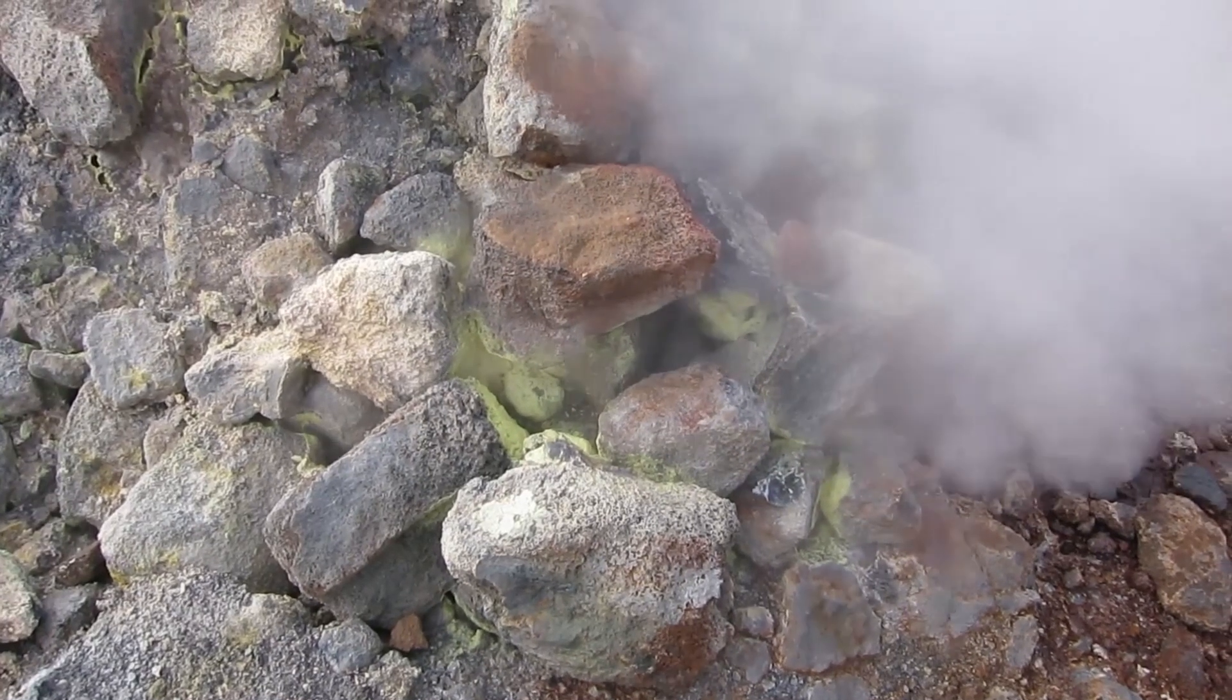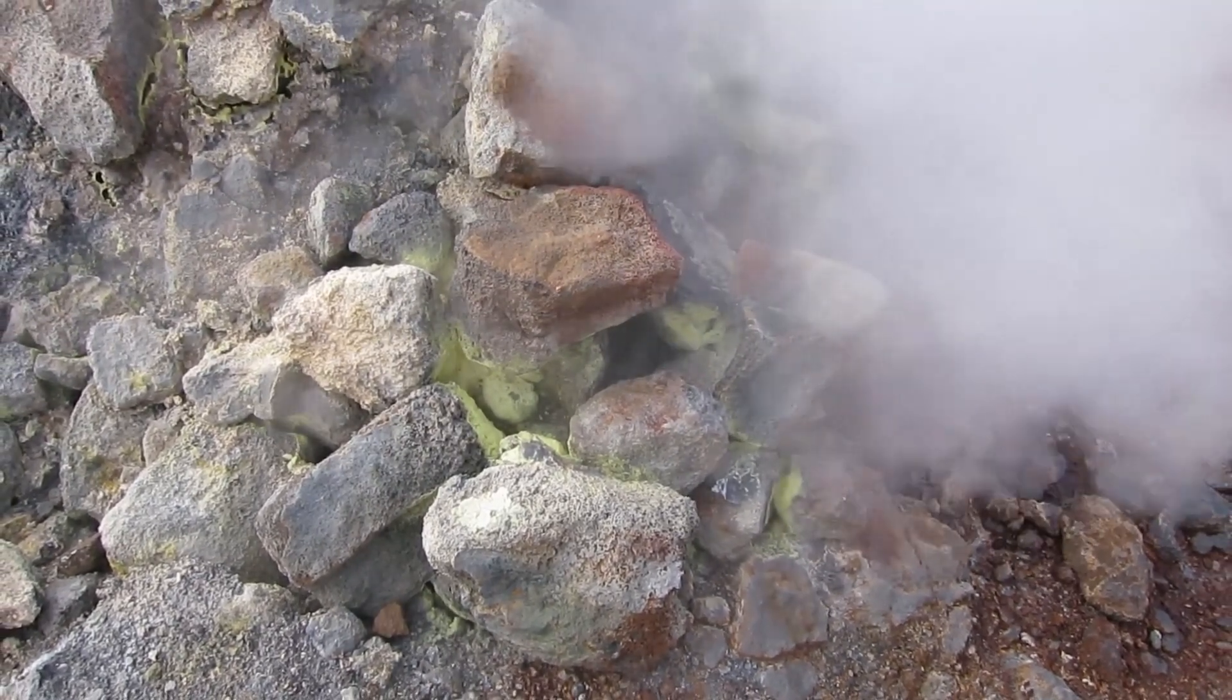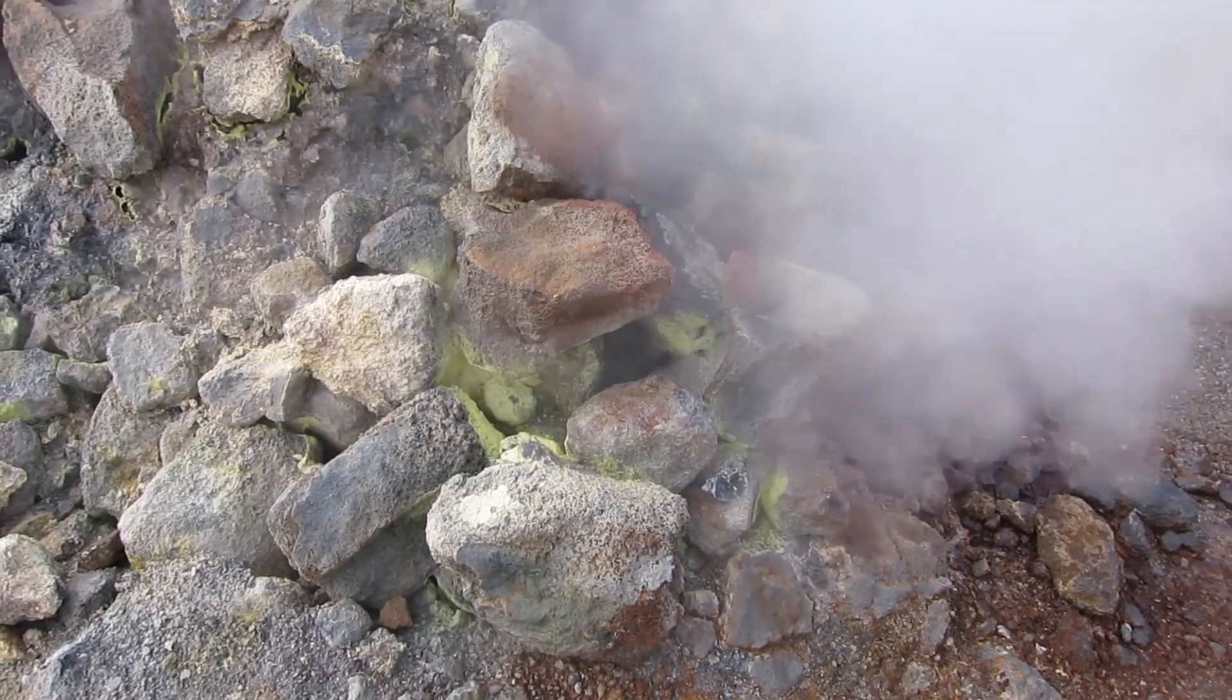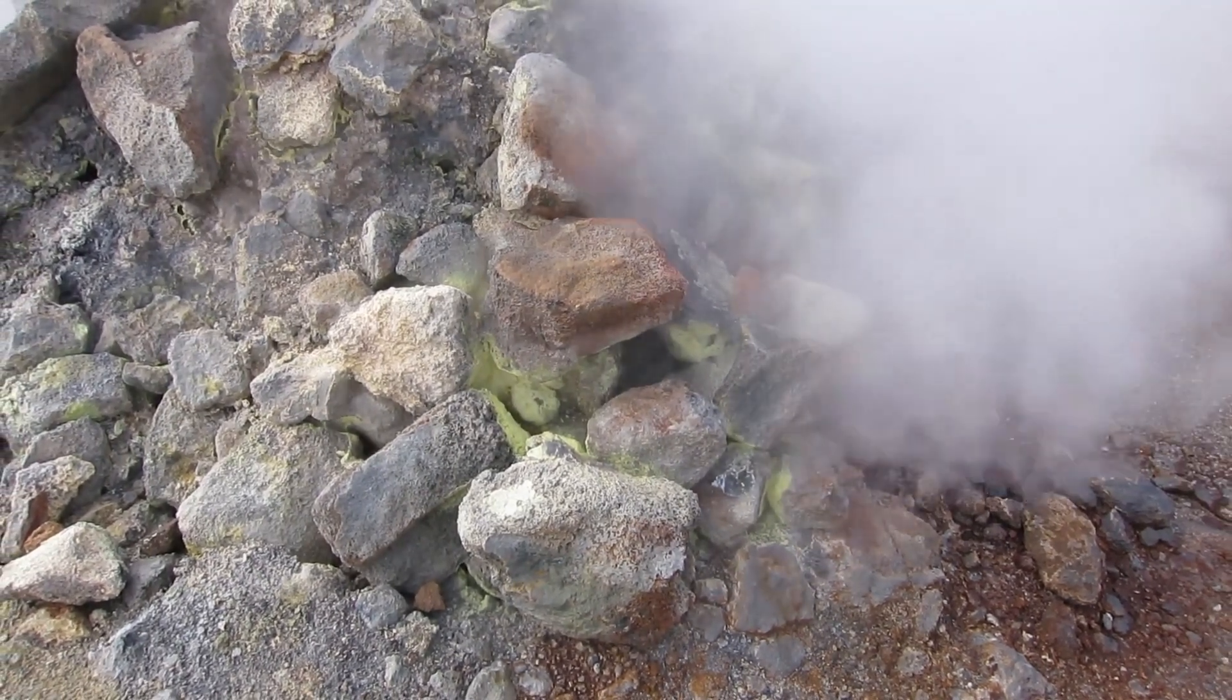Around the same time, methane and carbon dioxide were being absorbed from the atmosphere by rocks. These gases are what keep the Earth warm by trapping the sun's light. And without them, the Earth fell into its very first ice age.